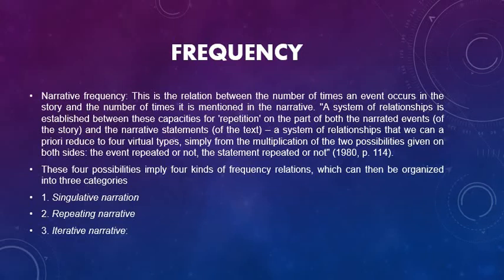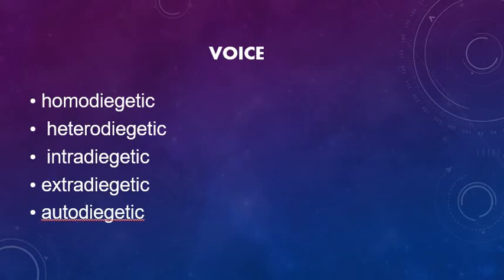The next important aspect is voice. Voice can be of 5 types: it can be homodiegetic, heterodiegetic, intradiegetic, extradiegetic or autodiegetic. The extradiegetic narrator is above the story. The heterodiegetic narrator is the one who does not participate in the story. When characters become narrators, they are intradiegetic. If such an intradiegetic narrator is also one of the characters in the story narrated by him or her, then it becomes a homodiegetic intradiegetic narrator. And when a character narrates her or his own tale, they may be described as autodiegetic narrators.